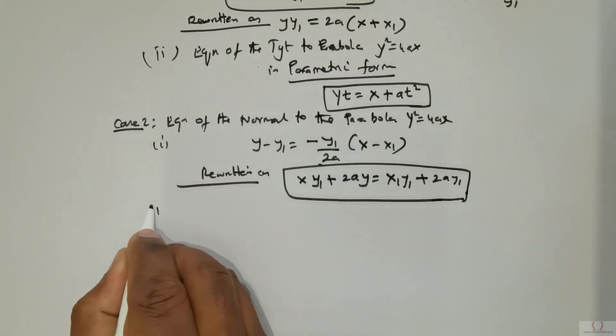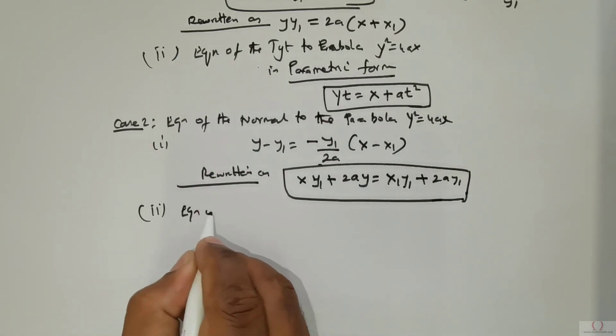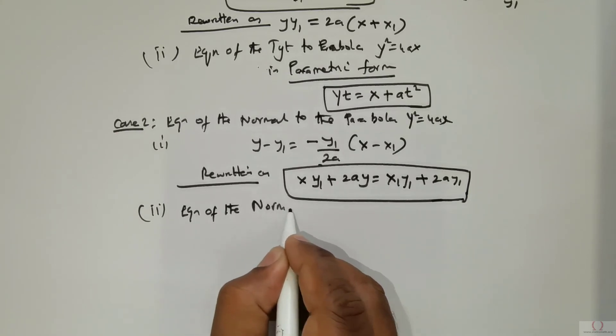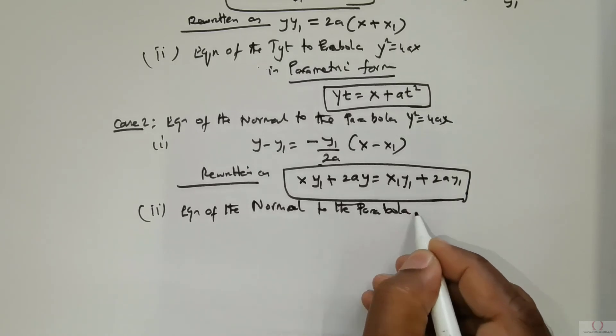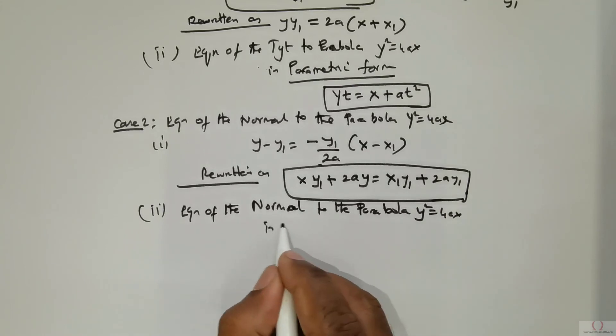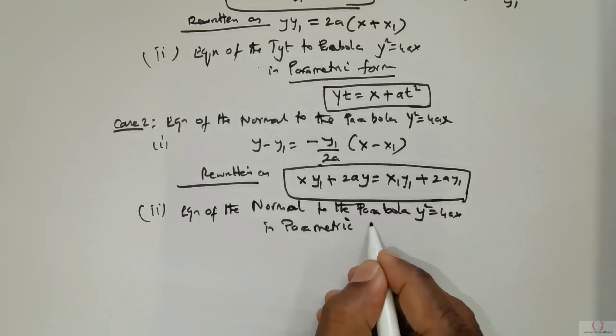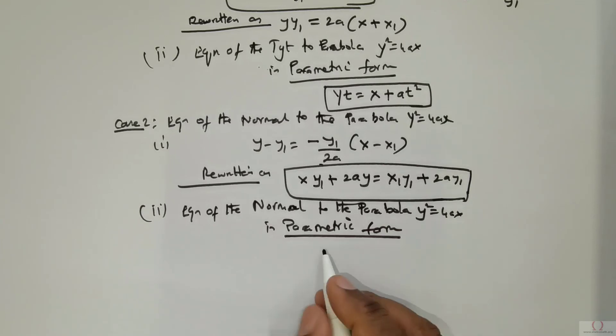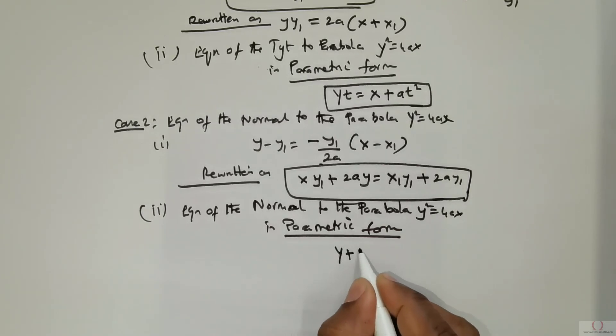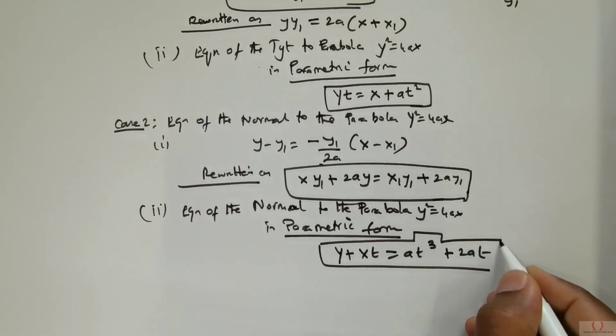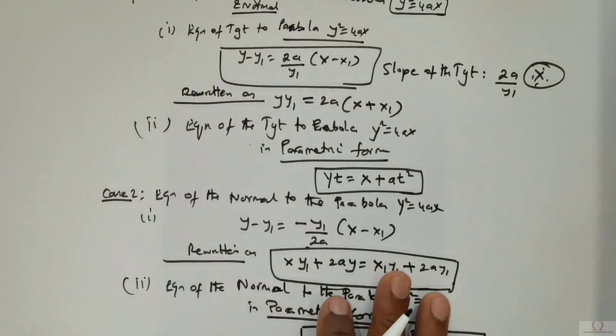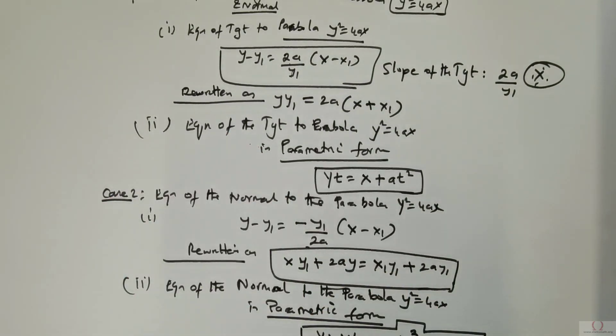Next is the equation of the normal to the parabola y² = 4ax in parametric form. That is going to be y + xt = at³ + 2at. Have this in mind. Now we are going to be using these concepts to do related problems. Thank you.